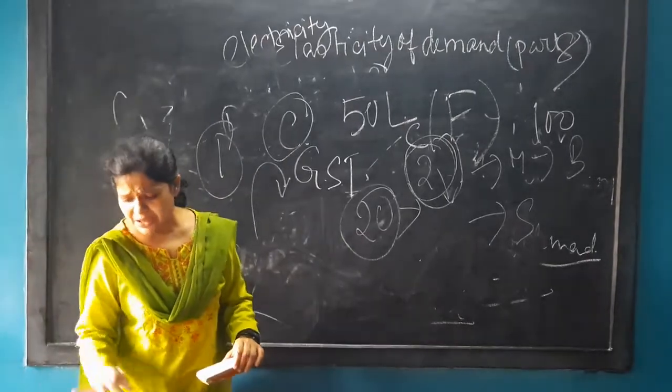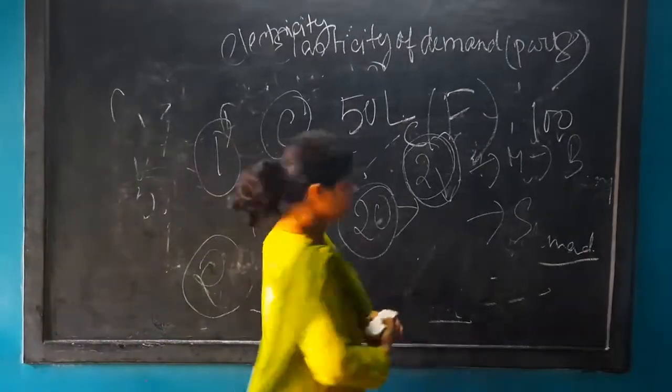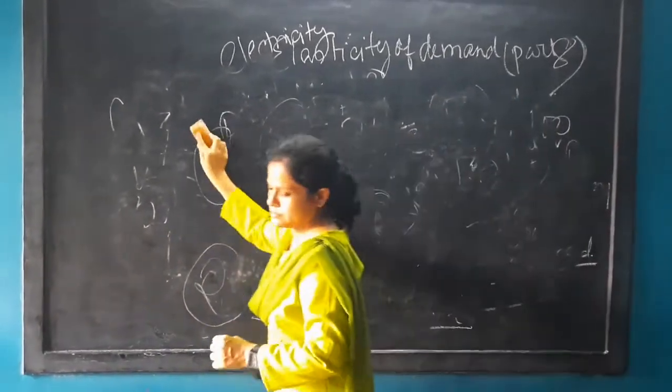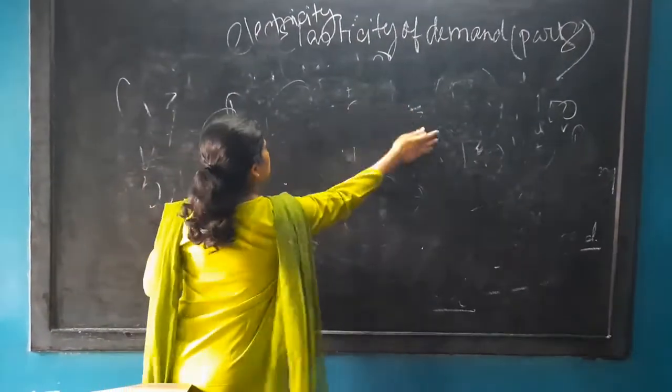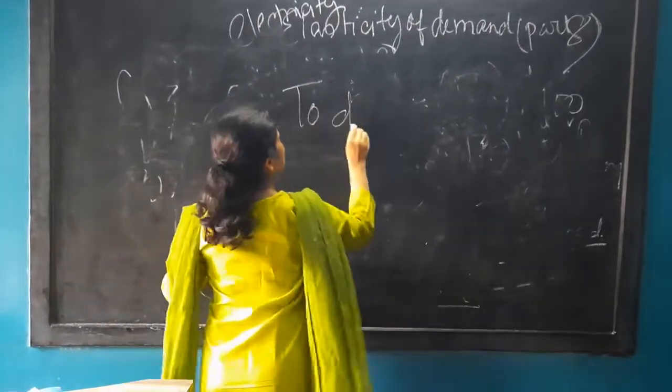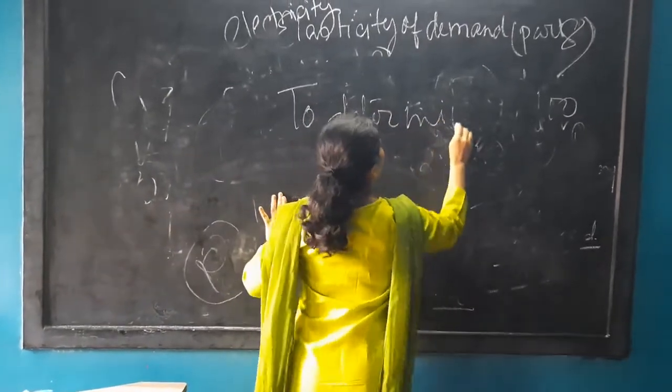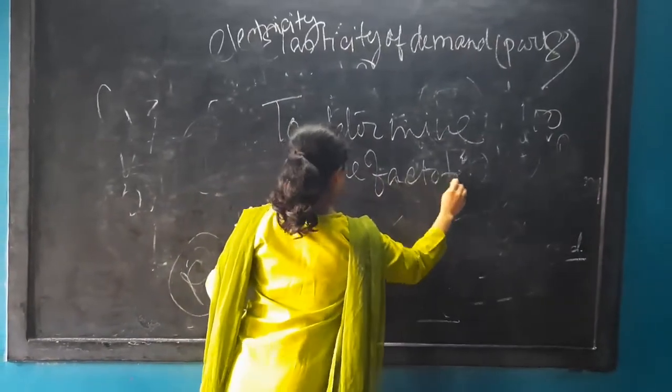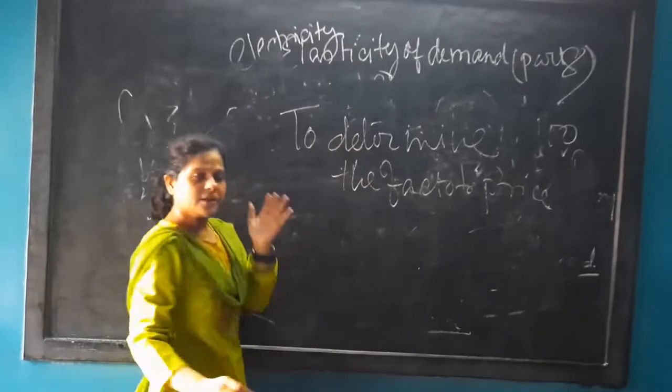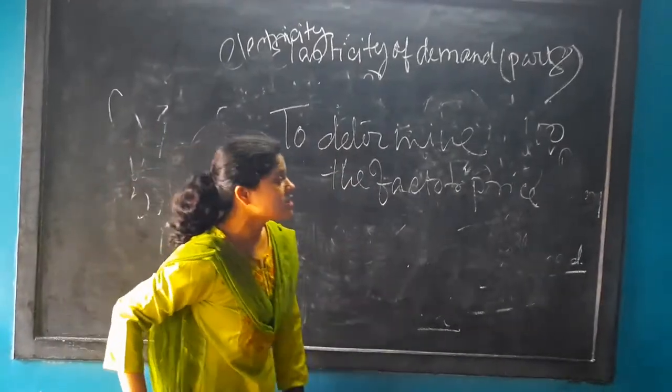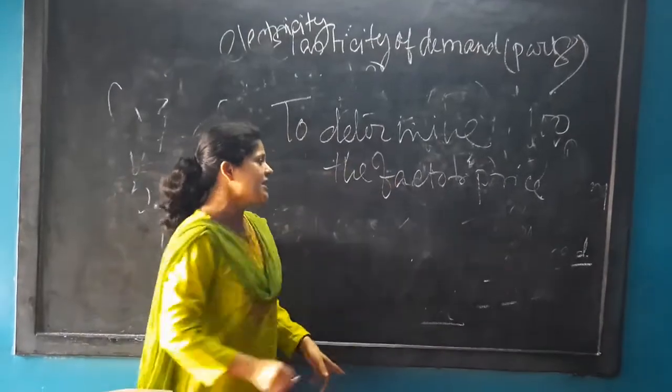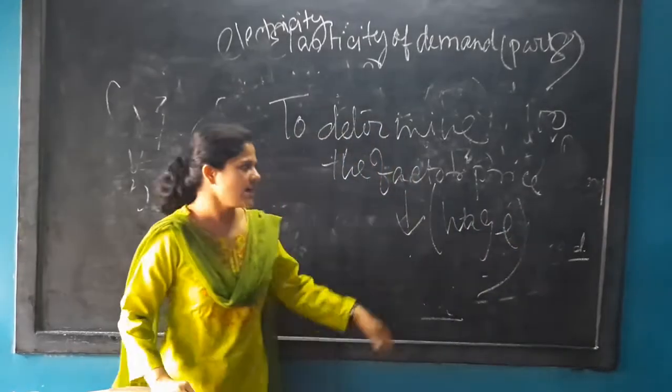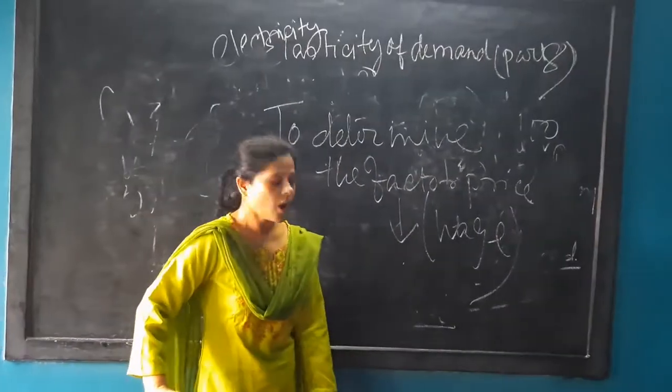Now, coming to the third part. First one, to determine the factor price. What are the factors? Land, labor, capital, organization are four factors. I will talk about the important factor price, that means wage. Wage is the factor price of the laborers.